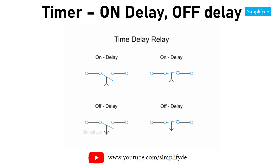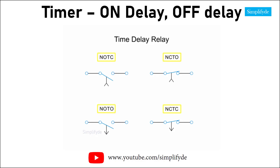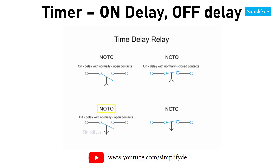Let's look at four basic types of relays. There are two types of relay functions: on delay and off delay, each with two types of contacts — normally open and normally closed — represented here by four symbols. NOTC functions as an on delay with normally open contacts. NCTO operates as an on delay with normally closed contacts. NOTO functions as an off delay with normally open contacts, and NCTC operates as an off delay with normally closed contacts.